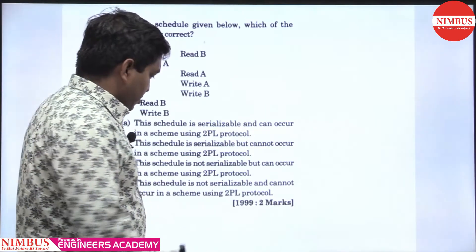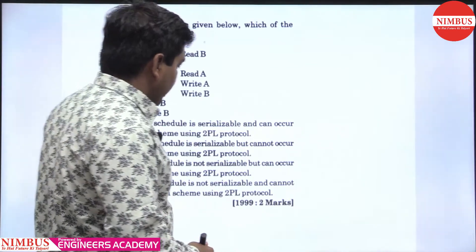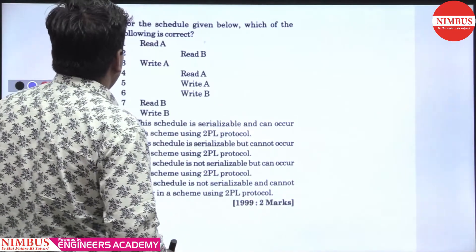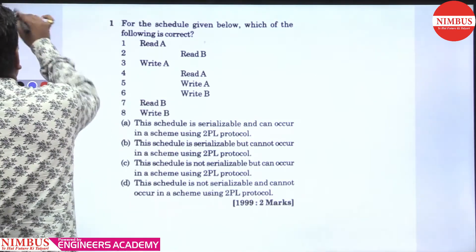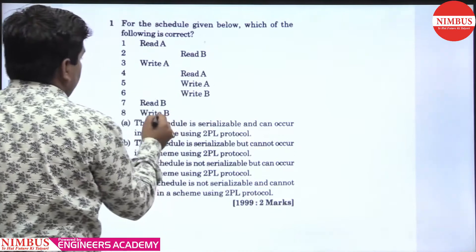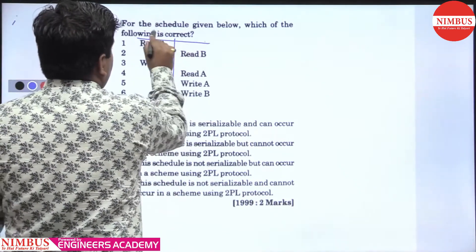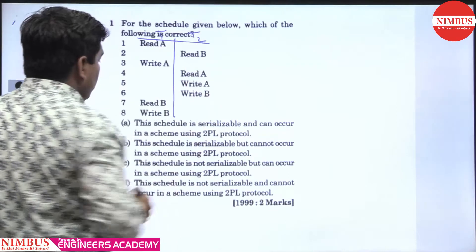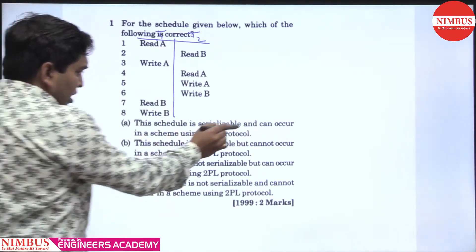Hello students, this question comes from GATE 99, worth 2 marks. For the schedule given below, which of the following is correct? There are two transactions T1 and T2. The options are: this schedule is serializable, but cannot occur under the 2PL scheme.